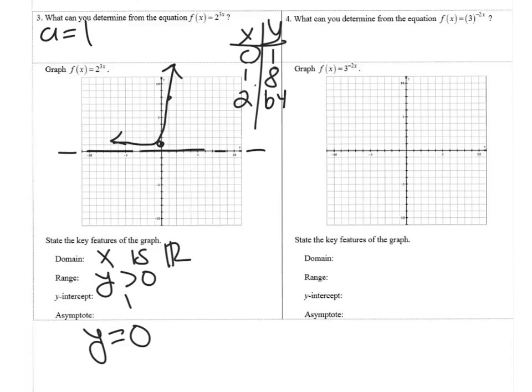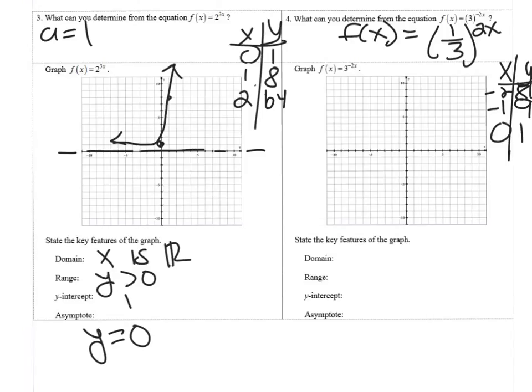Okay. And now for 4, I notice I have a negative exponent. So I can rewrite the equation as 1 over 3 to the positive 2x. And now I'm going to make a chart of values. If I plug in 0, I get 1. If I plug in positive values, I'm just going to get really big fractions. So if I plug in negative values, and I can use the original equation for this, negative 2 times the negative 1 is positive 2. And 3 squared is 9. And if I plug in negative 2, that's going to be an exponent of 4. And 3 to the fourth is 81, way off my graph. So let's do 0, 1, negative 1, 9.